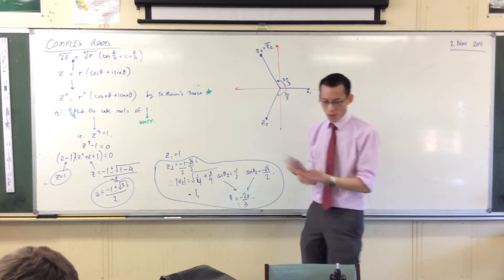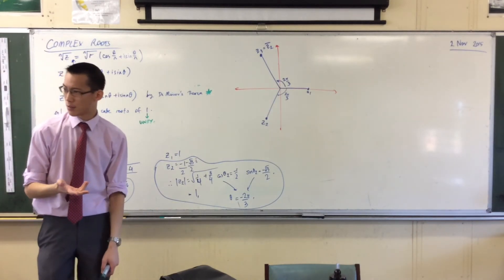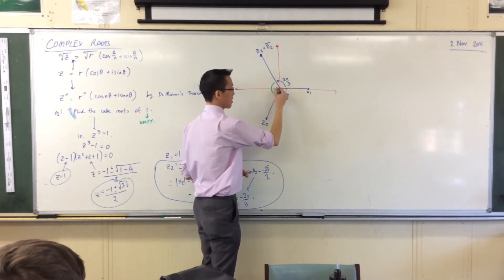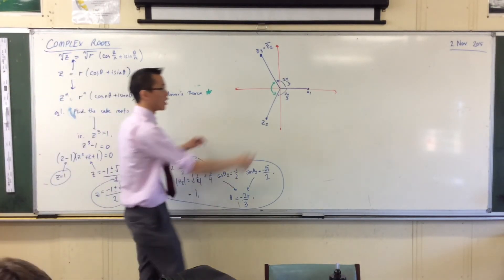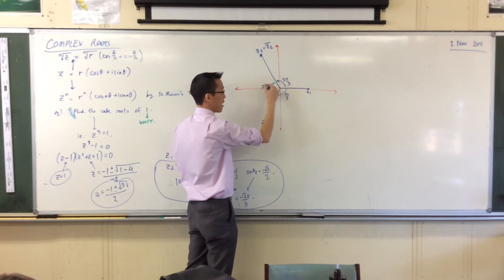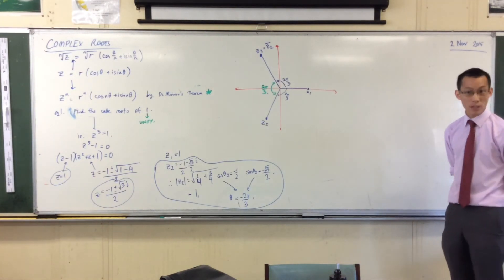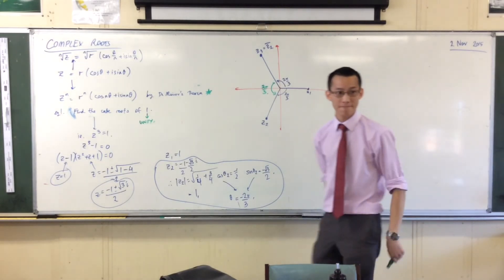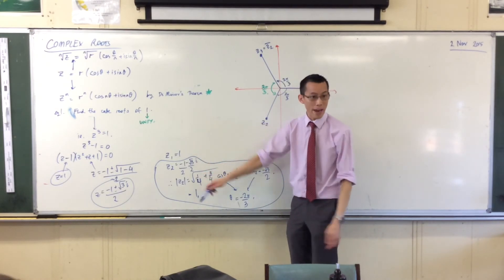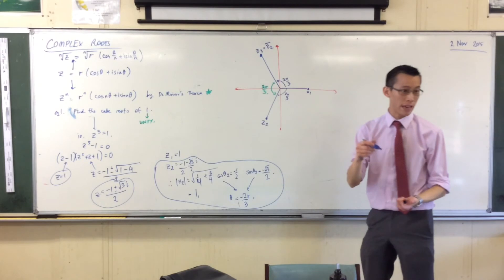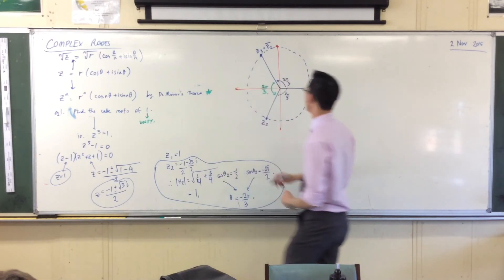We don't need it to work out where the location of this thing is, but there's one angle at the origin that I'm missing. Can you tell me what it is? This guy here. Well, if they all add up to 2 pi, that's adding up to 6 pi on 3. I've got 2 here and 2 here, so what's left over is 2 pi on 3. I can put my unit circle on here.